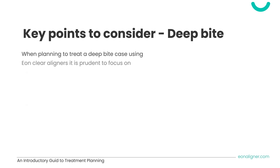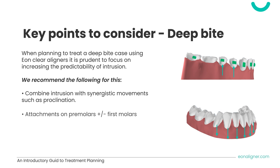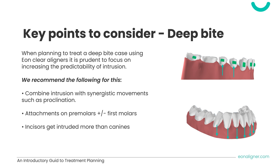When treating deep bite with EON aligners, it's very important to focus on increasing the predictability of intrusion, which is one of the more challenging movements. EON recommends combining intrusion with synergistic movements like proclination. A second consideration is adding attachments on premolars and/or first molars, because they are essential to counteract the extrusive forces exerted on anterior teeth when being intruded. Attachments on canines are also essential, as incisors will usually get more intruded than canines, so attachments should be placed on canines to counteract any extrusive forces on them.